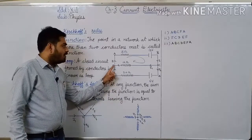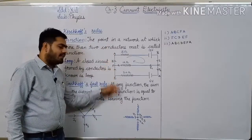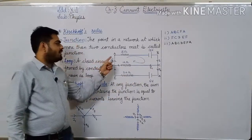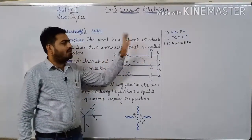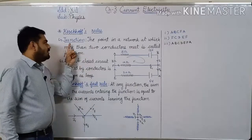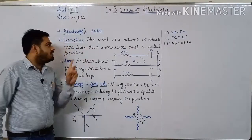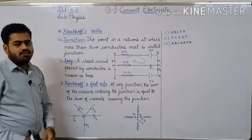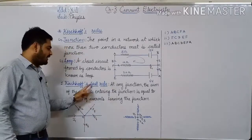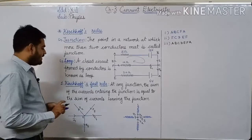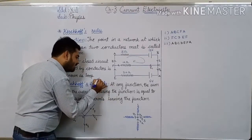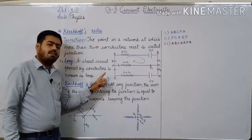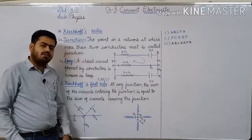The definition of junction: the point in a network at which more than two conductors meet is called a junction. So C and F are junctions. To form a loop, take a closed path in the circuit — that becomes a loop. In total, we are going to study two rules: Kirchhoff's first rule and Kirchhoff's second rule. Kirchhoff's first rule is called the junction rule, also called KCL — Kirchhoff's current law.